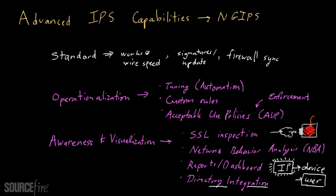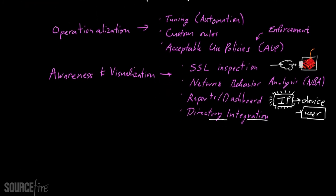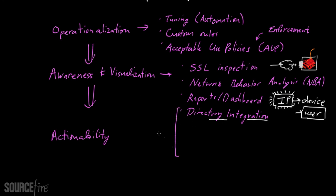The next point is around not just awareness and visualization, but ultimately being able to take action — actionability is really critical. It's not enough to have good awareness and visualization; you have to be able to act on it. Directory integration is one way to do that, and it might be better suited under the category of actionability.